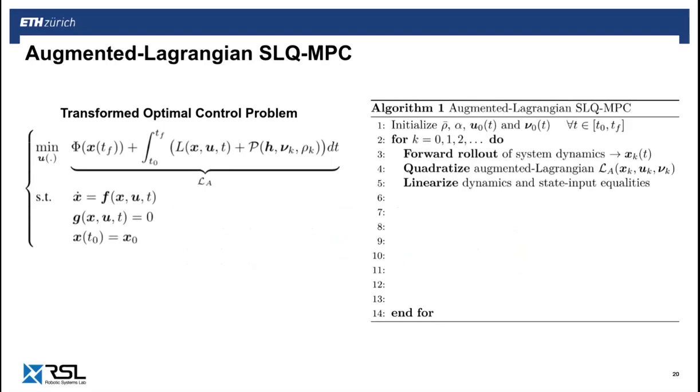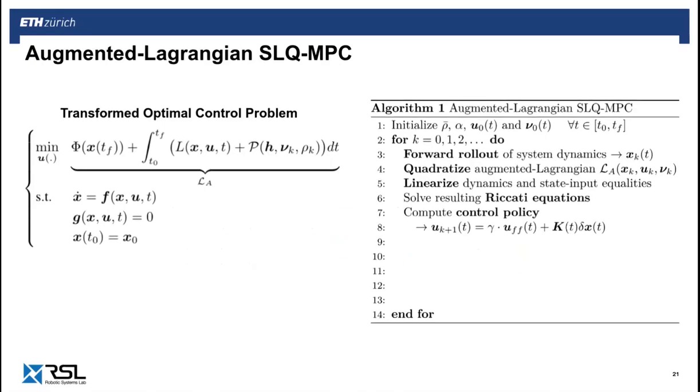Now, in order to solve the approximated problem, SLQ relies on Pontryagin's minimum principle, which boils down to a minimization of the Hamiltonian function. The Hamiltonian in this case is defined by adjoining the dynamics and constraints to the augmented Lagrangian through the use of additional Lagrangian multipliers. As a result, a Riccati-like equation emerges, which when solved yields a constrained consistent control policy.